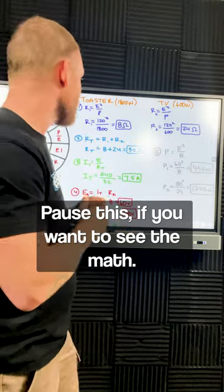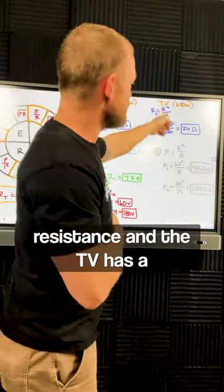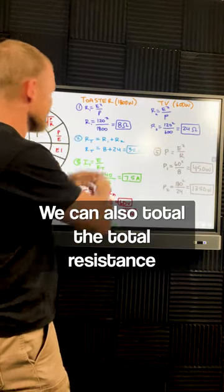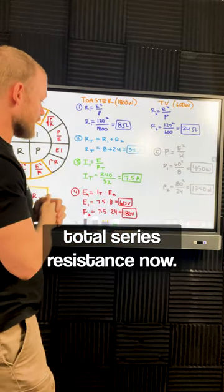Pause this if you want to see the math. But essentially we can figure out that the toaster has an 8 ohm resistance and the TV has a 24 ohm resistance. We can also total the resistance and see that we have 32 ohms total series resistance now.